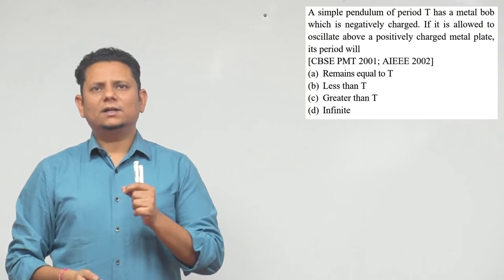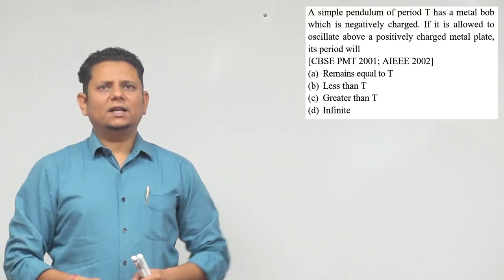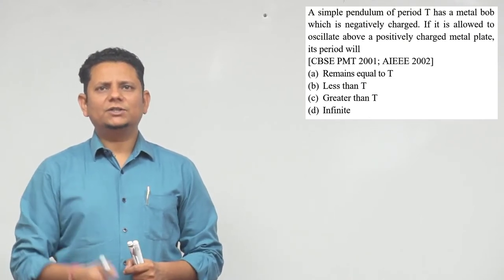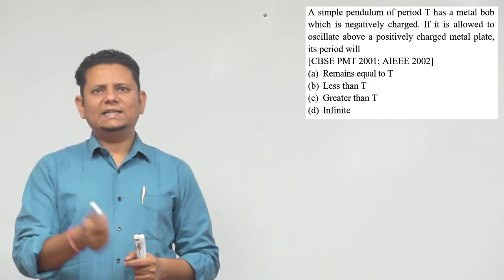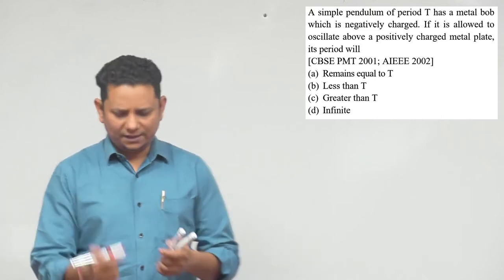Next question. A simple pendulum of time period T has a metal bob which is negatively charged. If it is allowed to oscillate above a positively charged metal plate, its period will: remains equal to T, less than T, greater than T, or infinite.